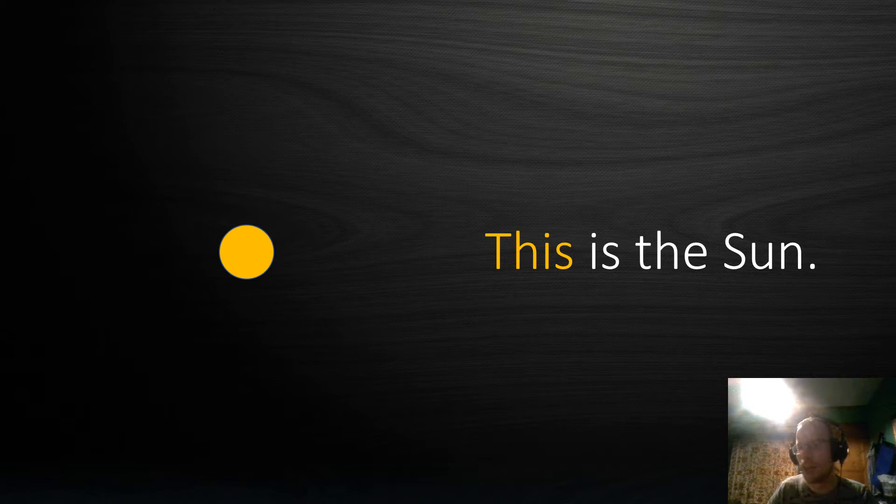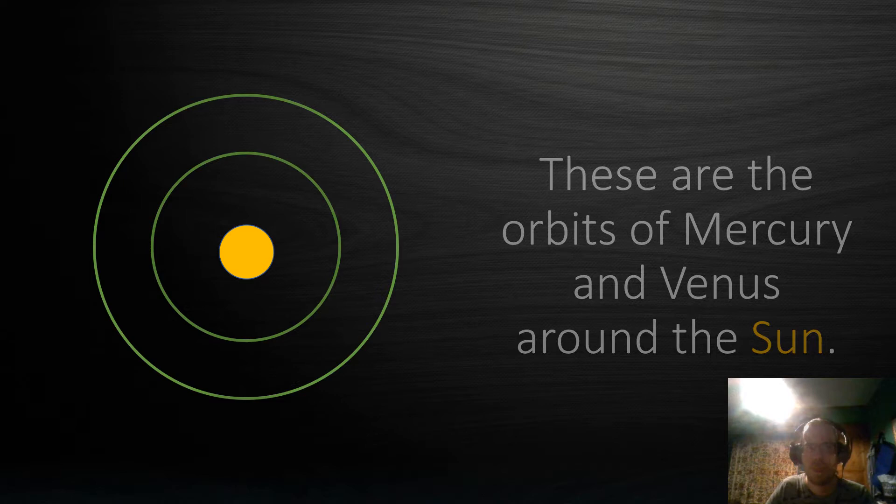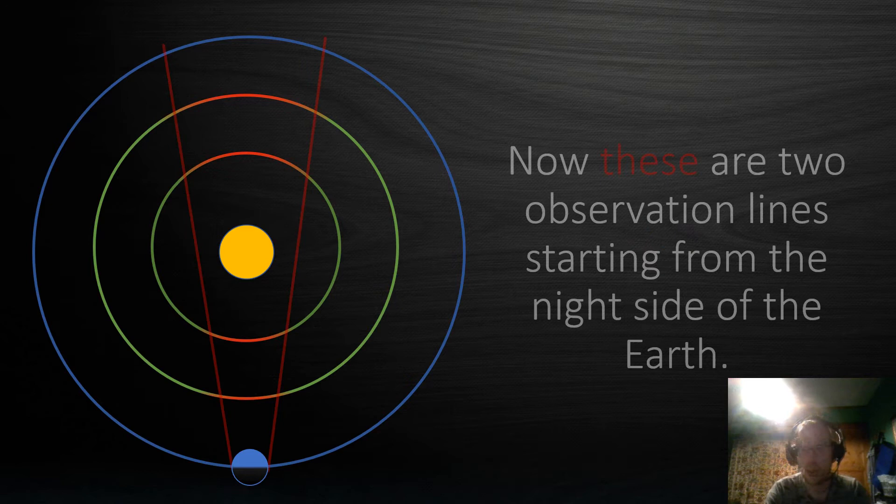So this here is the Sun. And these green rings here are the orbits of Mercury and Venus around the Sun. And lastly of course this blue ring is the Earth on its orbit.